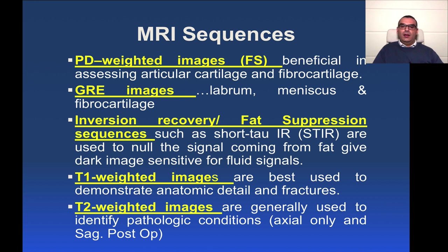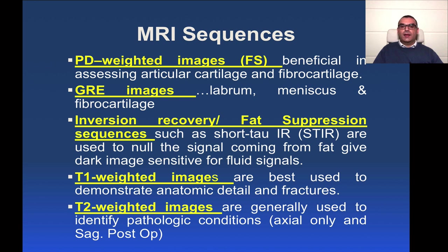For the knee, in our practice we always include a sagittal T1 sequence, which is very sensitive for anatomical details and assessment of the bone marrow. T1 is very sensitive for the assessment of fractures — in fact, T1 may be more sensitive than CT in detecting subtle fractures. T2 weighted images are important mainly for post-operative studies and we include it routinely in an axial view, which is very important for assessment of the retropatellar cartilage and ACL integrity.